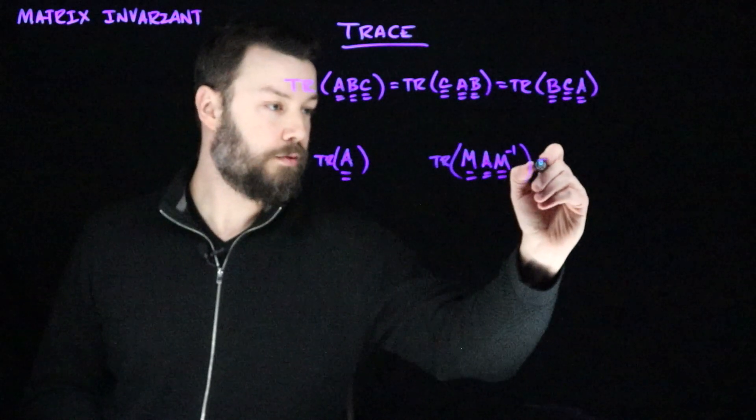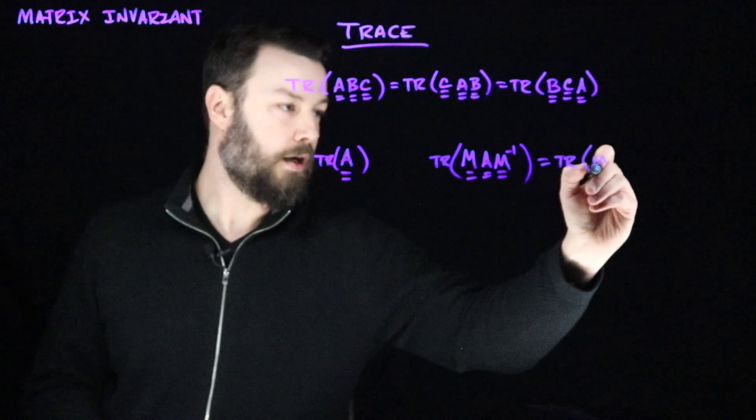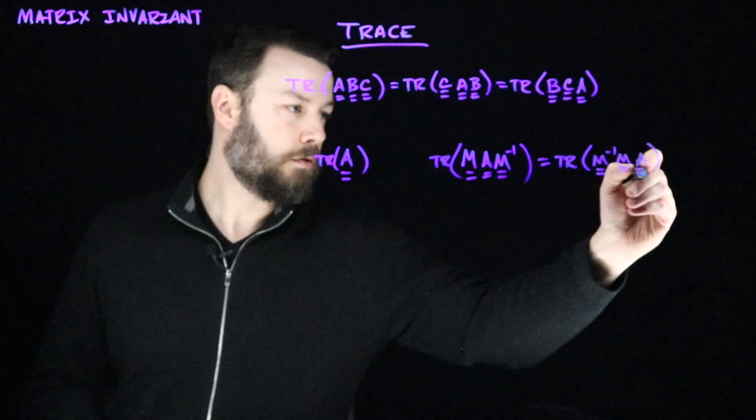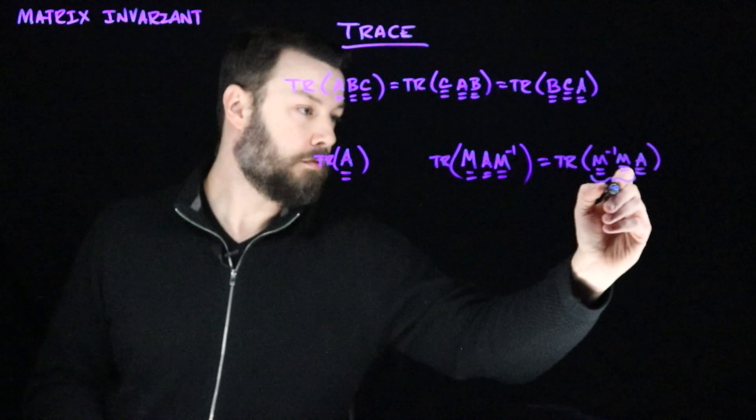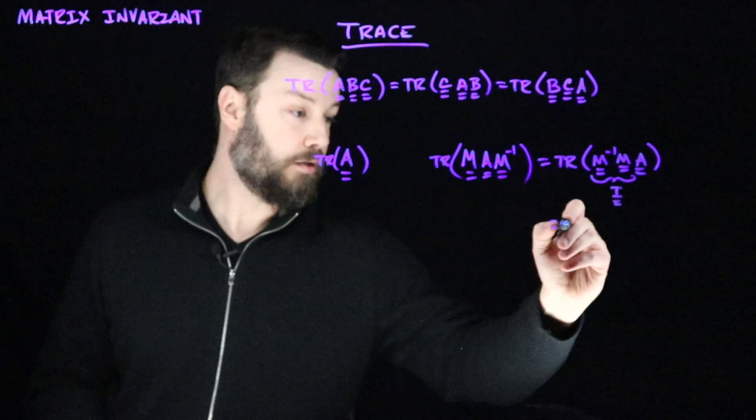And the answer is no, because, of course, what I can do is I can rotate M around like that. And now, this is the identity. And so, that means that this is equal to just trace of A.